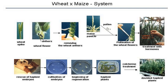Coming to the wheat into maize system. First, wheat spikes are selected — wheat is taken as female and maize as male. The wheat anthers are removed and maize pollens are collected and pollinated on the wheat spikelet. Then, to avoid embryo abortion, embryos are rescued and cultivated on petri plates or in growth medium. Then it will start regenerating and haploid plants are obtained. If double haploid is needed, colchicine treatment allows doubling of chromosomes.